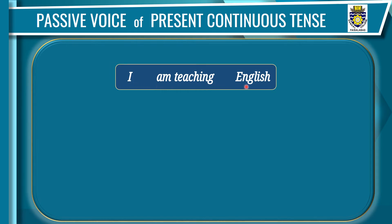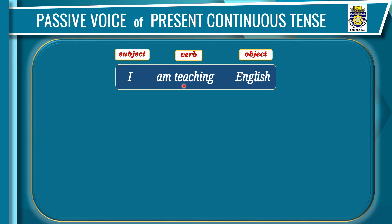Here comes a sentence of present continuous tense: 'I am teaching English.' A sentence has three parts — subject, verb, object. 'I' is the subject; the subject is the doer of action. 'Am teaching' is the verb — the action done by the subject. 'English' is the object — the third part — something that receives the action done by the subject.